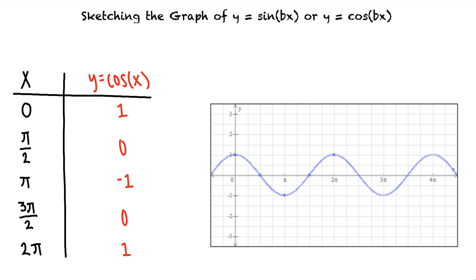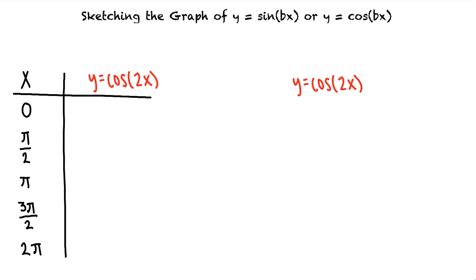Let's graph y equals cosine of 2x. For this new function we no longer have an angle of x but rather an angle of 2x. To find five key points for the graph we want the angle 2x to equal 0, pi halves,